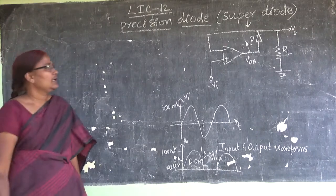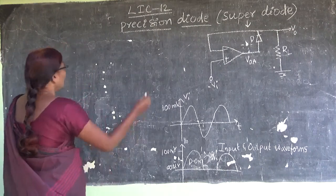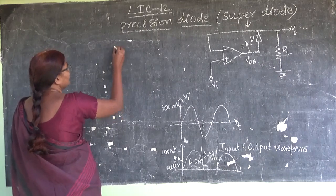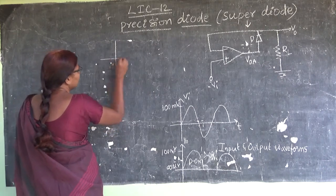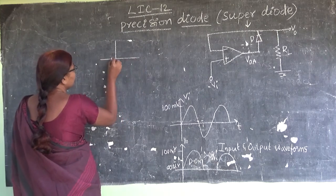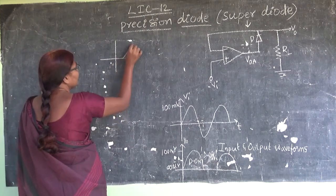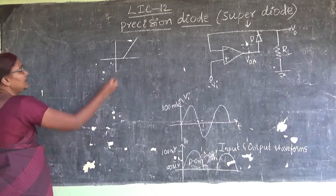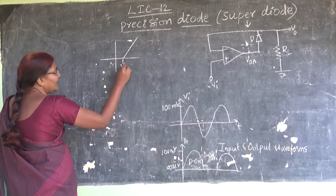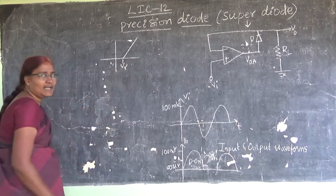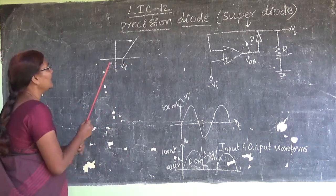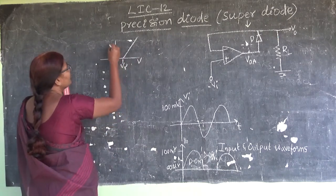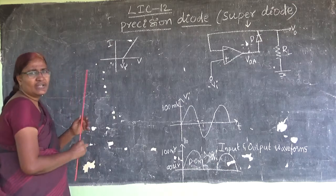Sometimes we know that the normal P-N junction diode characteristic is like this, and the ideal diode characteristic is along this. After V gamma, the cut-in voltage, the current starts to rise.